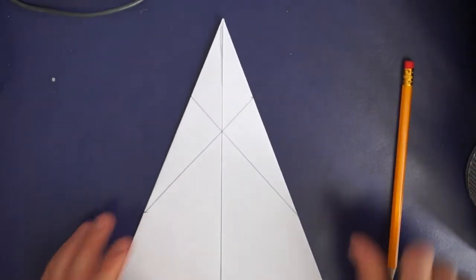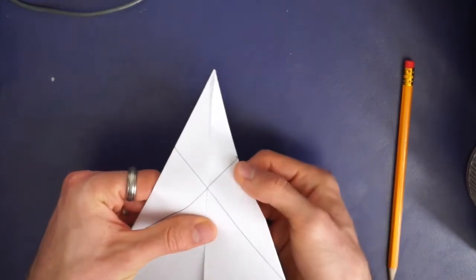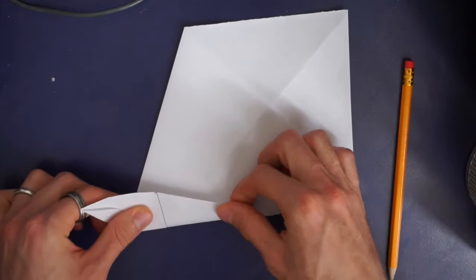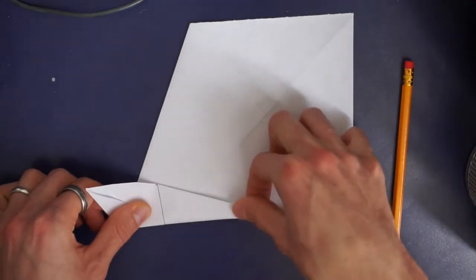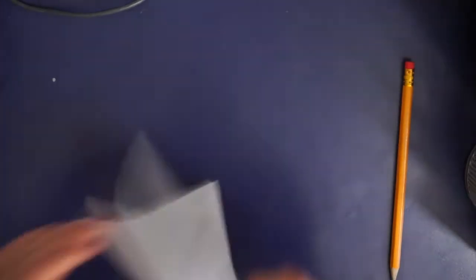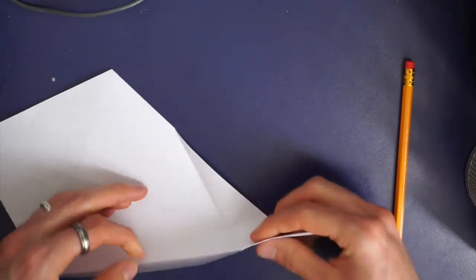So when you've got these diagonal lines what you want to do is fold the paper backwards along those lines. There's our first one. So you can see I've turned it over to make this fold but I'm still going backwards and then again on this side.